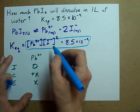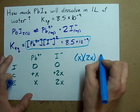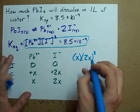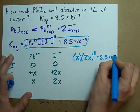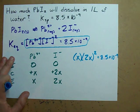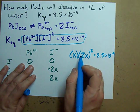What's the concentration of I minus? 2X. Don't forget, it's squared. And that turns out to be 8.5 times 10 to the minus 9.